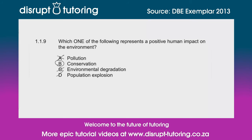Option C: environmental degradation — the destruction of the environment — that is a negative impact. Option D: population explosion is also negative, because the more people we have, the more places they need to stay, and the larger the impact on the environment. It's negative because it leads to more destruction as we remove plants, ecosystems, and animals to build more buildings for us to live in.